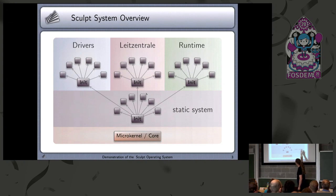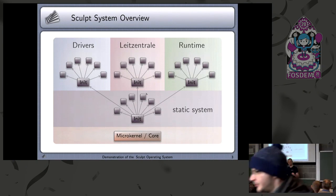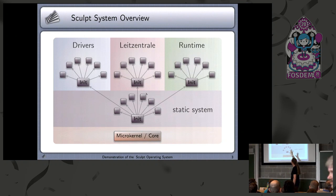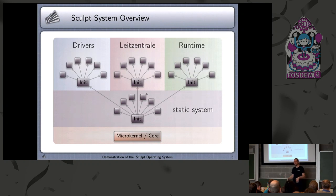On top of the static system, there are three dynamic systems: one for doing some basic drivers like the graphics driver needed to interact with the system; one system I use to control the machine, that's the light centrale — a kind of sophisticated controlling panel; and then there's the screen part where the user can basically do whatever the user wants. That's the basic idea behind the system.